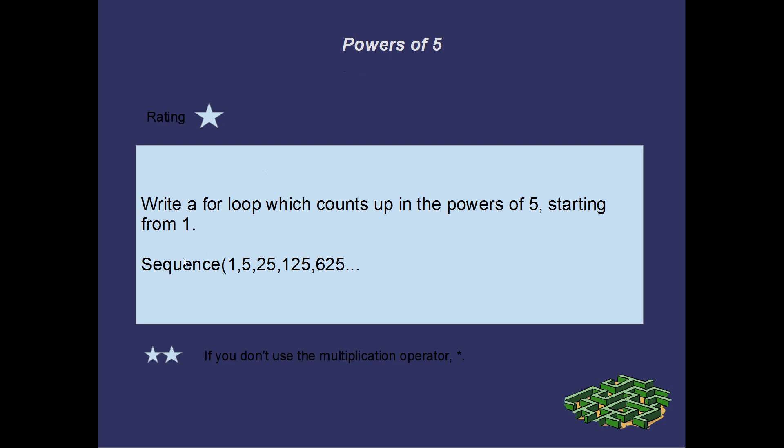Powers of 5. Yeah, I want you to write a for-loop that spits out the powers of 5. So 1, 5, 25, 125, 625. Yeah, how would you do that? It's worth two stars if you can do it without using the multiplication operator. Yeah, that's pretty easy. Give it a shot.